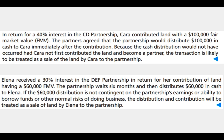In the first example, in return for a 40 percent interest in the CD partnership, Cara contributed land worth $100,000 fair market value. The partners agreed that the partnership would distribute $100,000 in cash to Cara immediately after the contribution. Because the cash distribution would not have occurred had Cara not first contributed the land and become a partner, this transaction is likely to be treated as a sale of the land by Cara to the partnership. This is a disguised sale—an exception to non-recognition treatment, making it a taxable transaction.